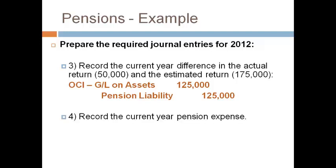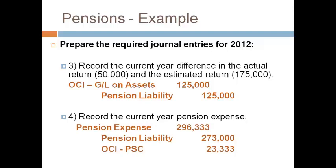The fourth entry is to record pension expense. Increase pension expense by the total amount calculated and record the amounts that are moved out of OCI and into pension expense included in the pension expense calculation. The prior service cost went into OCI with a debit and comes out of OCI with a credit. This is the only amount included in pension expense because the actuary change is not part of pension expense until next year, and the deferred loss is not large enough to matter. The pension liability amount is the service cost plus interest cost less the estimated return from the pension expense calculation.